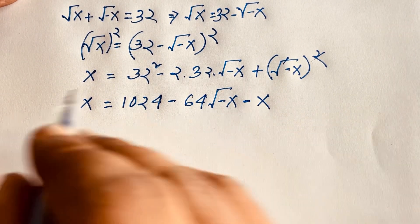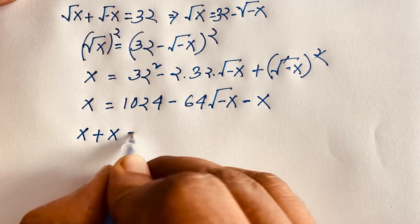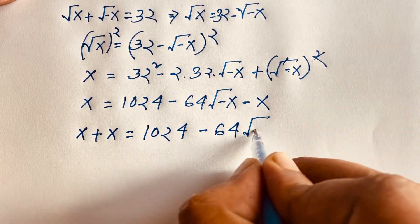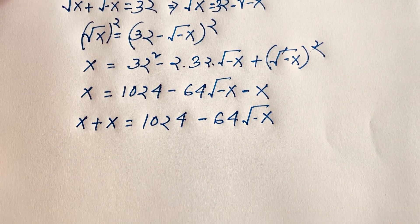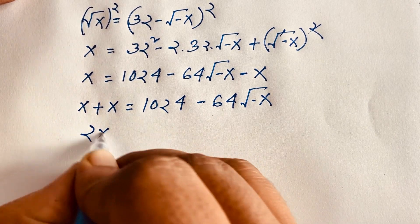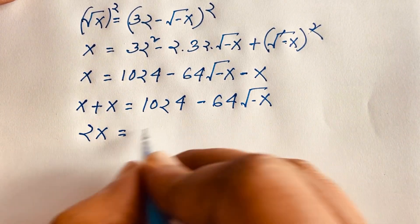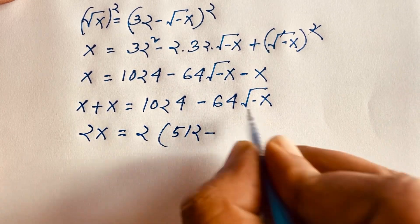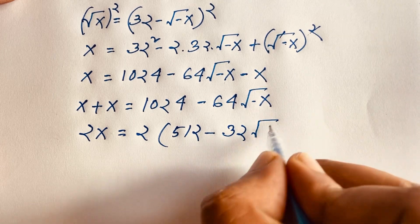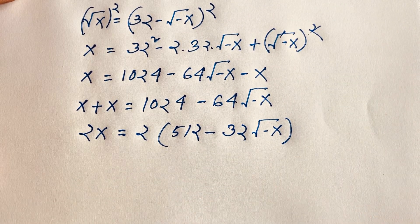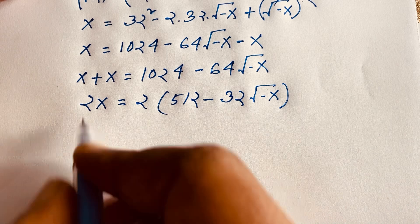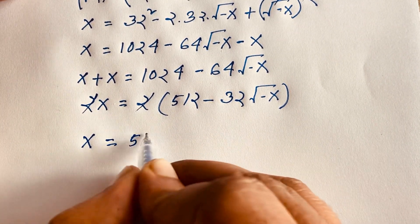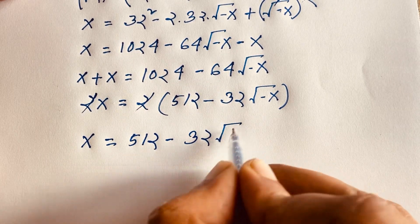If I move negative x to this side, it will be x plus x is equal to 1024 minus 64 square root of minus x. Then x plus x is 2x, and 2 is common, so 1024 divided by 2 is 512, and 64 divided by 2 is 32. Dividing both sides by 2, we find x is equal to 512 minus 32 times square root of negative x.